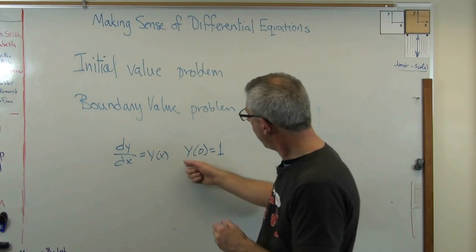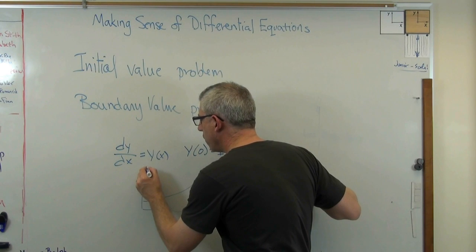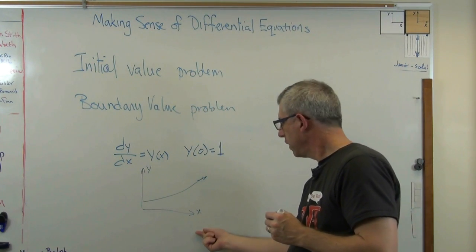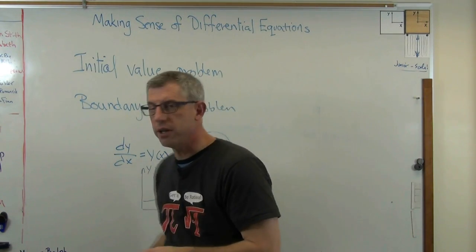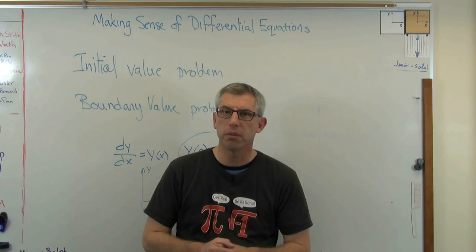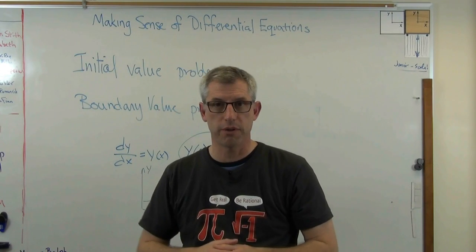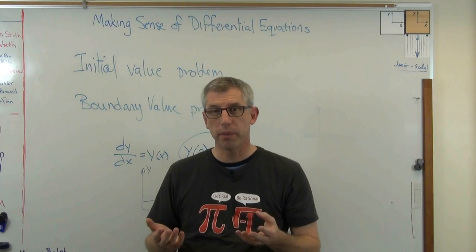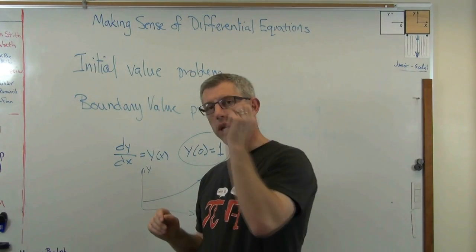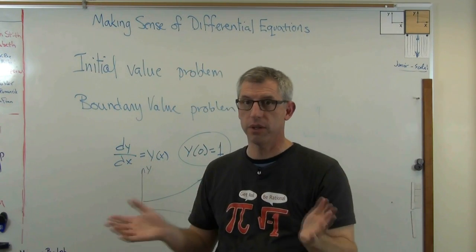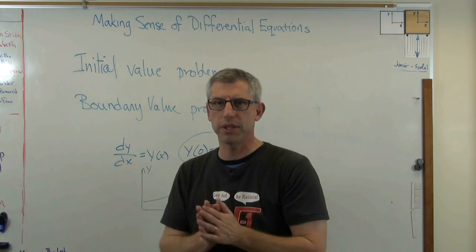This is called an initial value problem. If you want to think physically of what an initial value problem might be, imagine throwing a baseball or a cricket ball. As soon as it leaves your hand, you're done — there's nothing else you can do to affect the trajectory of that ball. Isaac Newton's doing the driving after that. Once you know the initial point where the ball was released, its velocity and its angle, there's nothing more to know about that trajectory. You can calculate pretty much exactly where that ball's going to hit.